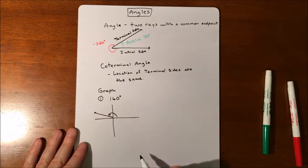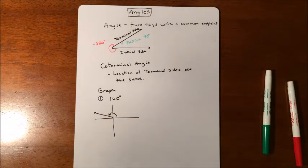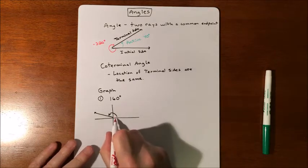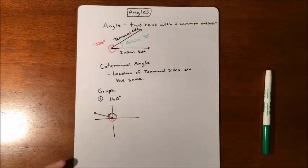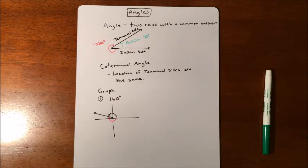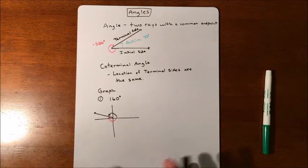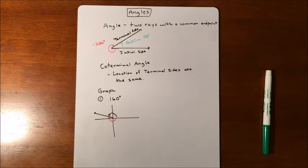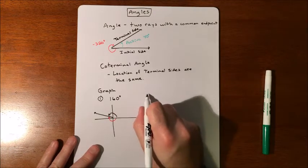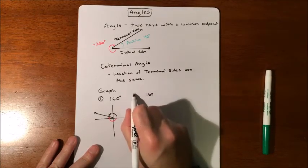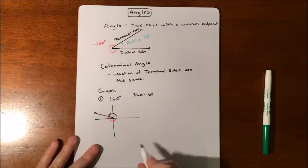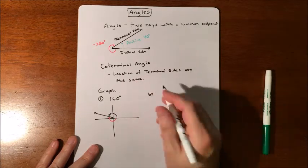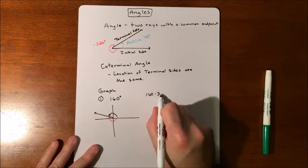But what would be a coterminal angle? Well, a coterminal angle would be if we went the other direction. So if we went the other direction, how do we figure that out? Well, a couple different ways. Some people will be able to kind of logically throw it. But mathematically, you can take 160 degrees, and you can take 160 minus 360.